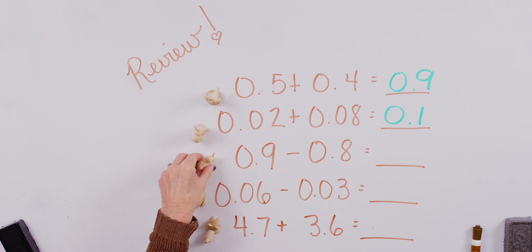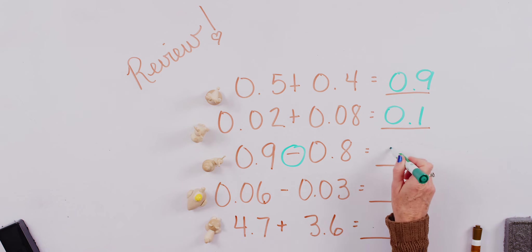All right, that was our deer. Now we're on to our snail problem. Ready? We have nine tenths minus eight tenths. Ready? Go. Did you say that leaves us with one tenth? Way to go.